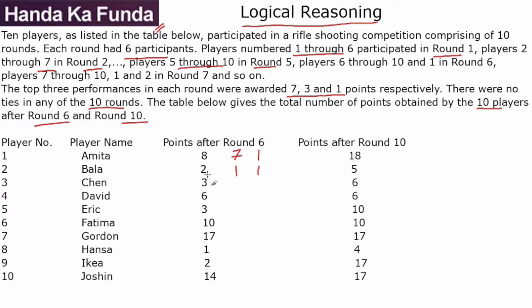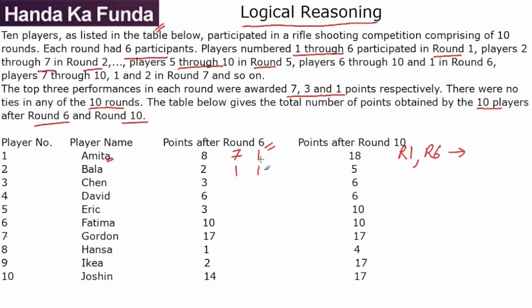But we know a few other things. This is the score after round 6. In the first 6 rounds, Amita participated in which rounds? Amita will definitely play in round 1. But round 2 is 2 to 7, so Amita is not there. Round 3 is 3 to 8, round 4 is 4 to 9, round 5 is 5 to 10 — Amita is not there in any of those. Amita is only there in round 1 and round 6.